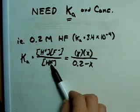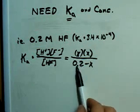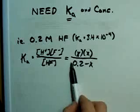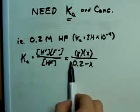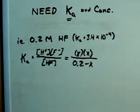We started with 0.2 of this, we now have less of it, and what we've lost of this, we've gained in H+ and F-.